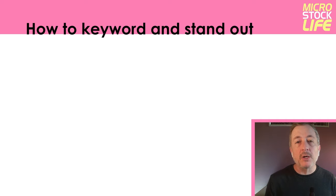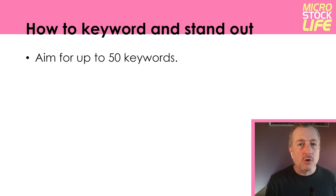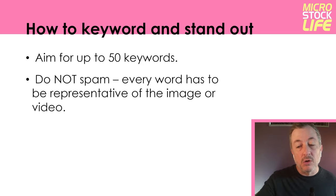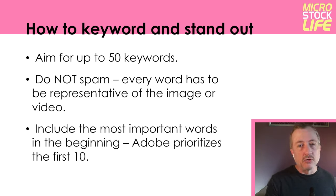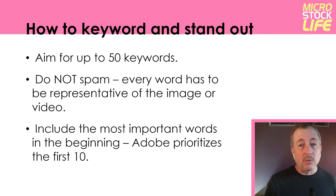Now we're into another very important part of the course — keywording, and how you're going to make your images and videos stand out from the rest of your competition at the agencies. Many agencies have a limit of 50 keywords you're allowed to tag for your images and videos. It's a good idea to aim for 50 — do not go over or you'll get rejected. But you also don't want to spam. Every word or phrase you add has to be representative of your image or video. Adobe Stock tells us that the keywords at the beginning of your list — roughly the top 10 out of 50 — are going to get extra weight. So make sure your most descriptive, important keywords come first.